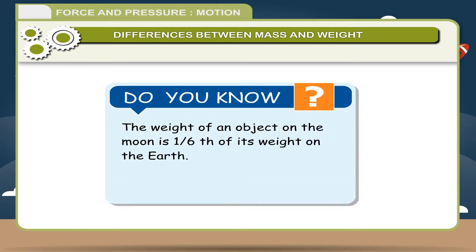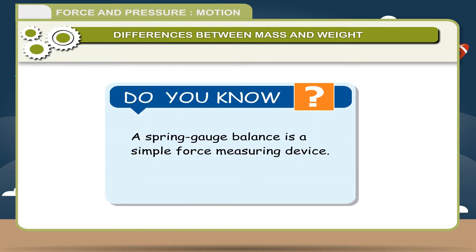The weight of an object on the moon is one-sixth of its weight on the earth. A spring-gauge balance is a simple force-measuring device.